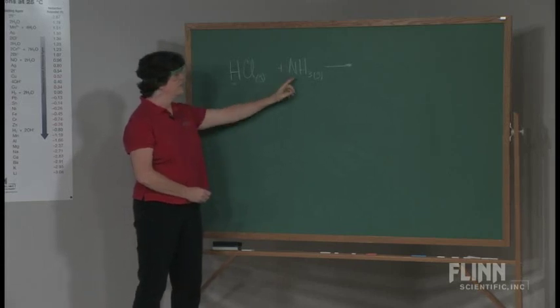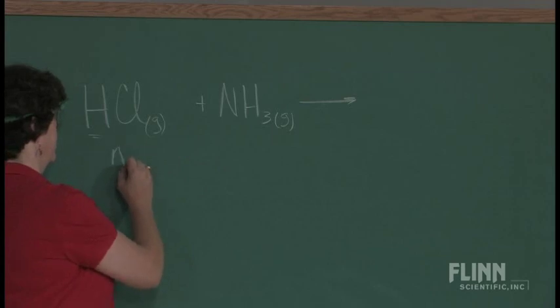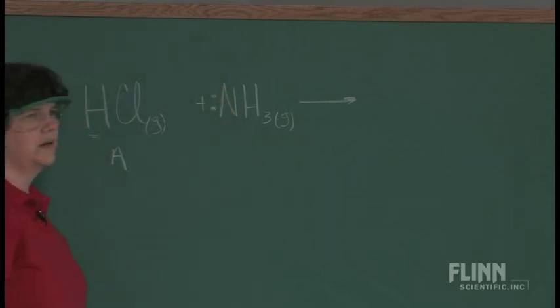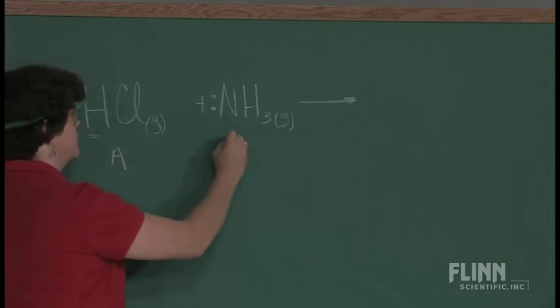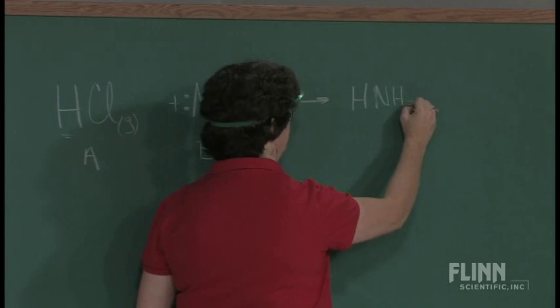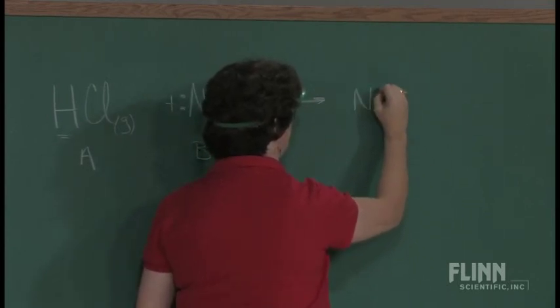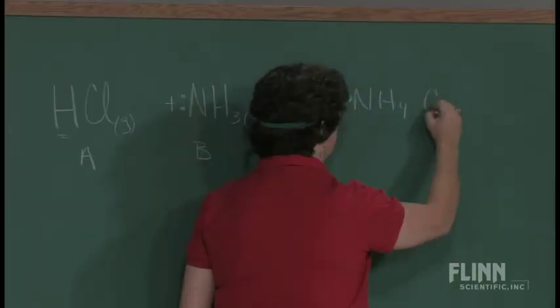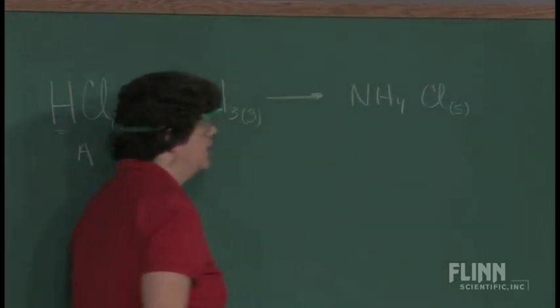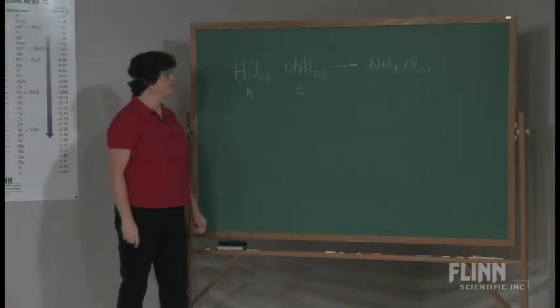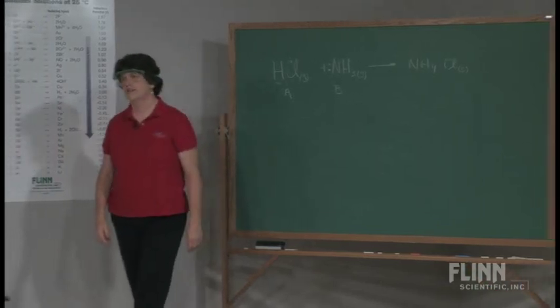And what's going to happen in a Bronsted-Lowry reaction is that the acid is going to donate its hydrogen to the base, and the base in this case is the ammonia molecule. It's going to readily accept that hydrogen ion because of its unshared pair of electrons. So this is going to act as the base and the product then will be HNH3. That's too awkward. Let's just call that NH4 because we're familiar with the ammonium ion. And of course the chloride has to go somewhere, and since this is not an aqueous solution it'll show up as a solid. They're not going to be dissolved ions. They're going to be in their solid form.